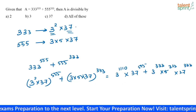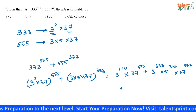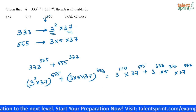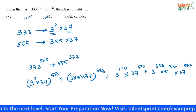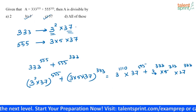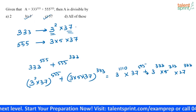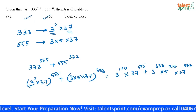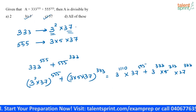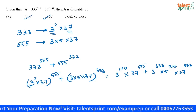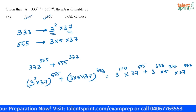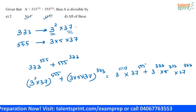This answer is definitely going to be divisible by 3 and 37, because 3 and 37 are present in both the terms. So definitely the answer is going to be divisible by 3 and 37.